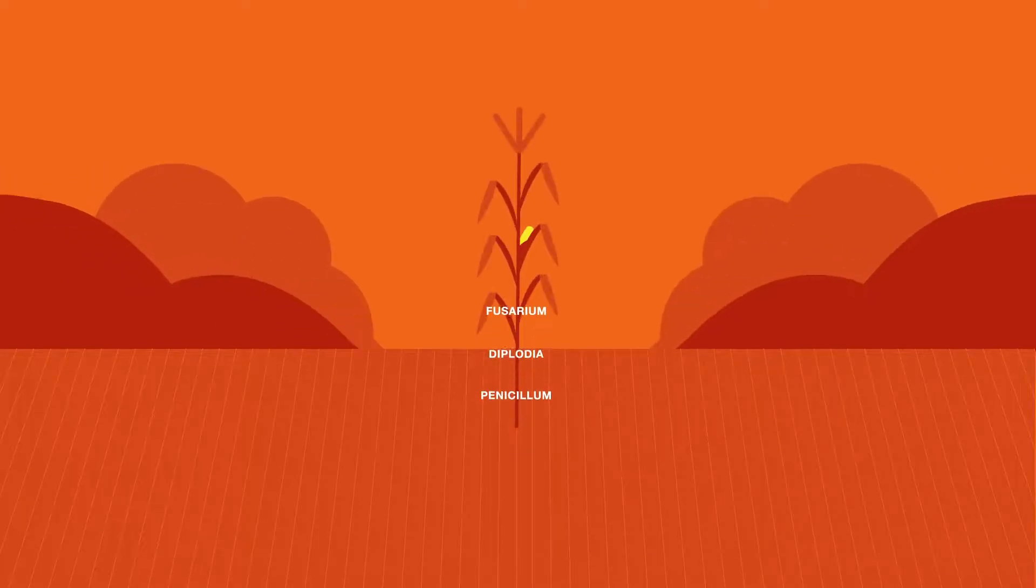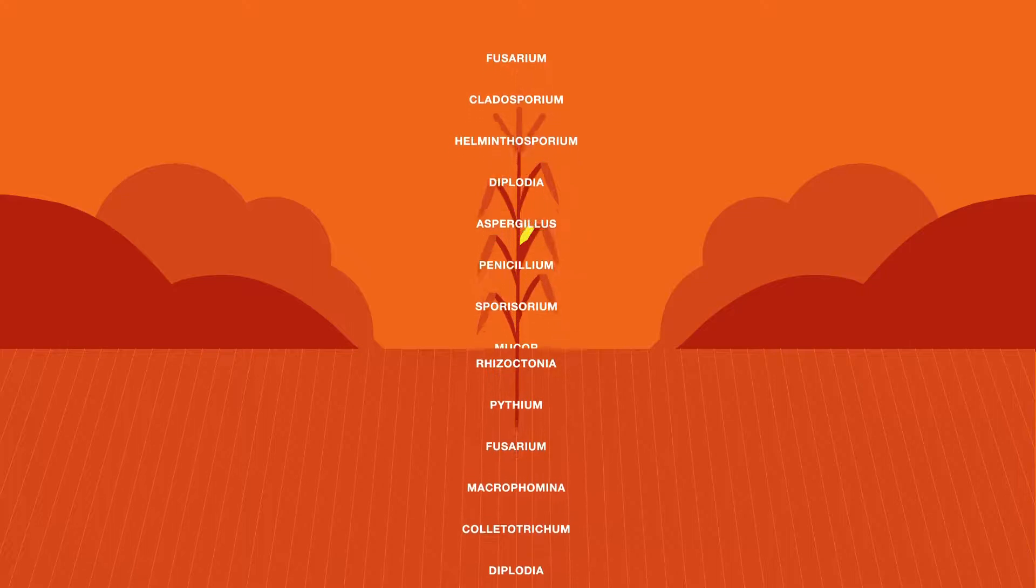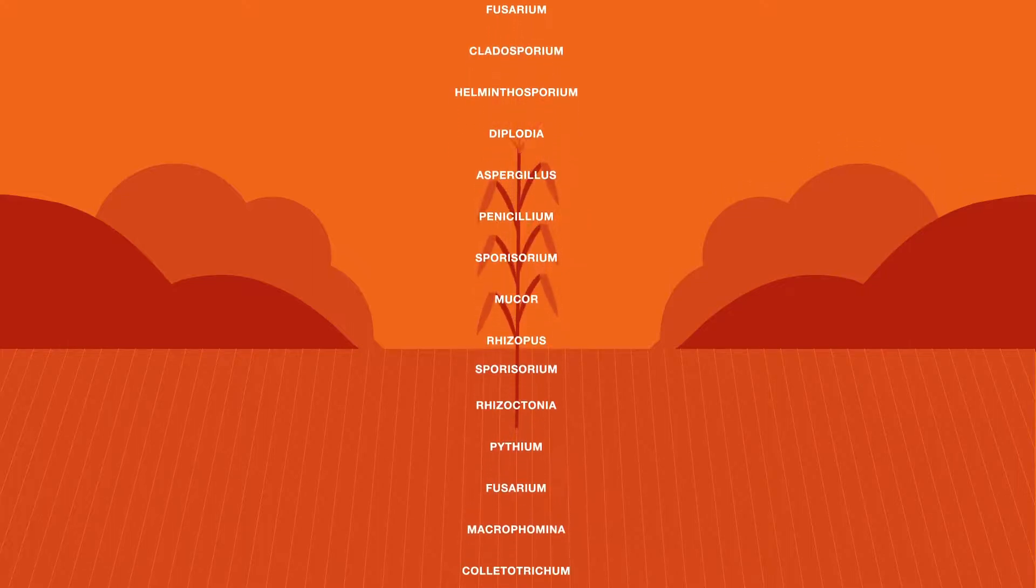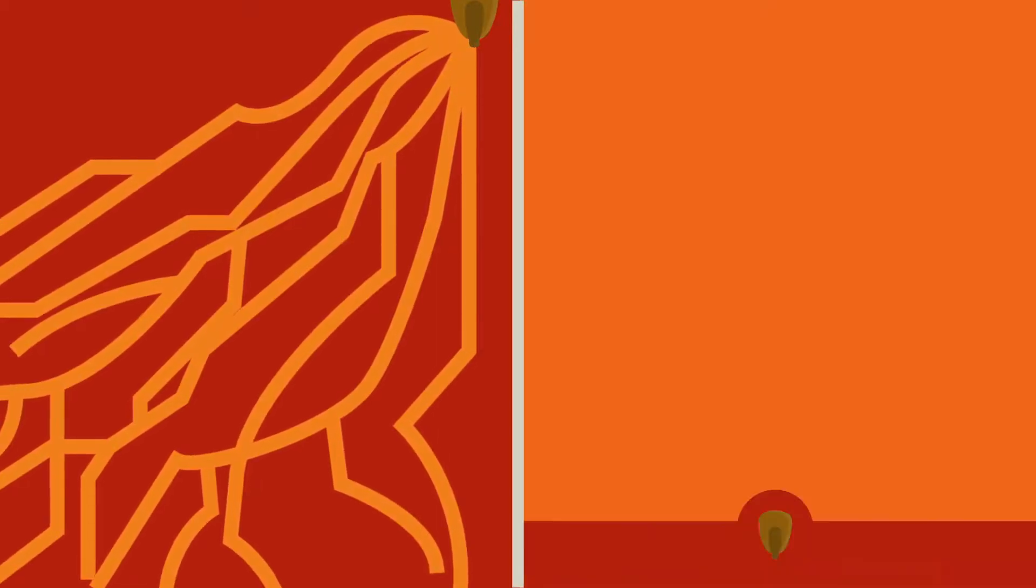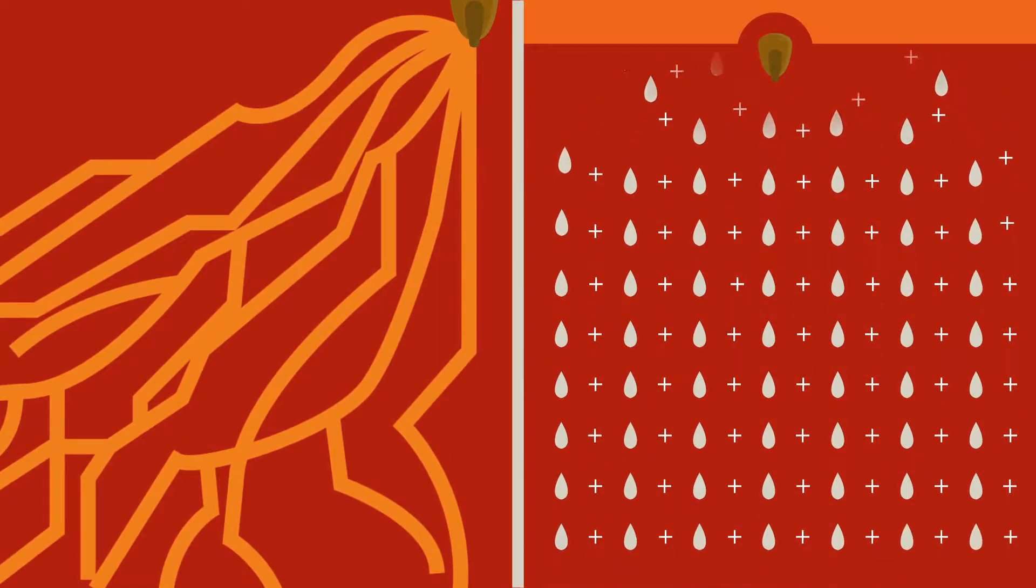In addition to Rhizoctonia, the systemic activity from Cruisermax corn or Evicta Complete corn can ward off a broad spectrum of seed-borne and soil-borne diseases. That extra defense helps increase surface area across the entire root system, so crops can absorb more water and nutrients from the soil.